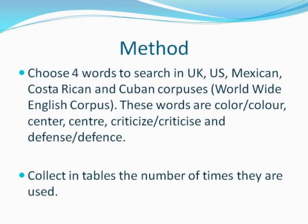My method is to choose four words which are different in some way or another in British and American English. The words I have chosen are colour, centre, criticise and defence. These have spelling differences between the two English varieties. I will be searching through the worldwide English corpus to discover the frequency of certain usages of variety in each different country, and I will then present the results in tables.